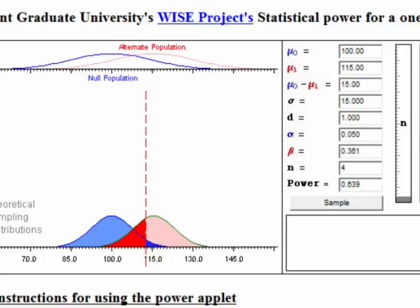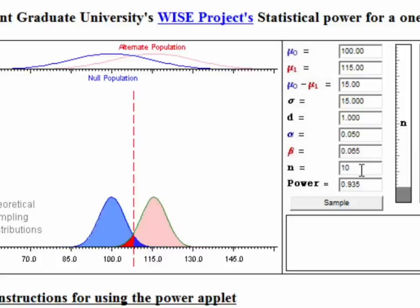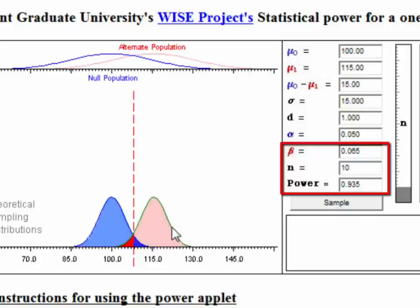Oftentimes, people think about power and the first thing that comes to mind is sample size. Here our sample size is 4 — let's increase it to 10 and see what happens. If you increase sample size, you increase power, and indeed, power went to 0.935 simply by increasing the sample size. Notice also what's happened to the shapes of the two distributions — both have become more homogeneous.